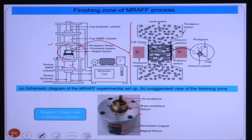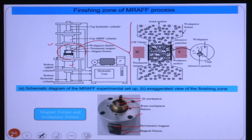These magnets are kept just opposite to each other, which is why you can see north pole and south pole. This is only the magnetorheological abrasive flow finishing process — we are not applying any rotational motion of the magnet. These magnets are fixed, as in MRAFF, with no rotation considered in the current case.